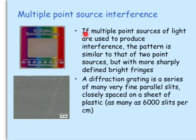If multiple point sources of light are used to produce interference, the pattern is similar to that of two-point sources, but with more sharply defined bright fringes. The bright fringes are brighter and more sharply defined.